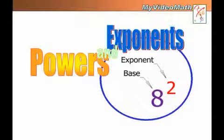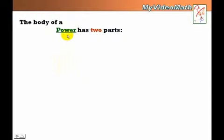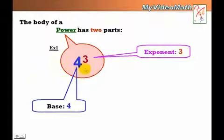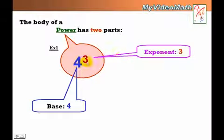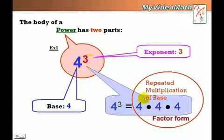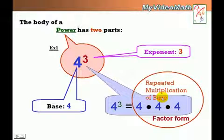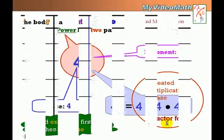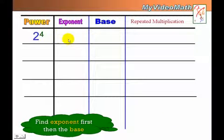In this lesson we're going to talk about powers and exponents. The body of a power has two parts: it has an exponent and a base. The entire thing — for example, 4 to the third power — is called a power. Mathematically, 4 to the third power means 4 times 4 times 4, which is a repeated multiplication of the base. This is called factor form.